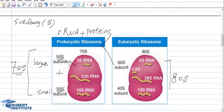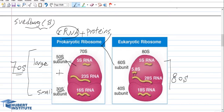Another difference between prokaryotic and eukaryotic cells is the size of the ribosome. Ribosomes are sometimes called non-membranous organelles, and we will discuss organelles in the next slides. Ribosomes are composed of two subunits — a small and a large subunit — and each subunit is composed of a specialized form of RNA called rRNA and also proteins. The size and molecular weight of ribosomes are described by an index called the Svedberg or S unit, based on the centrifugation process. In prokaryotic cells, the small subunit is 30S and the large subunit is 50S.